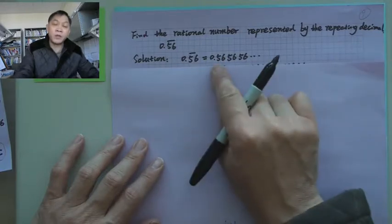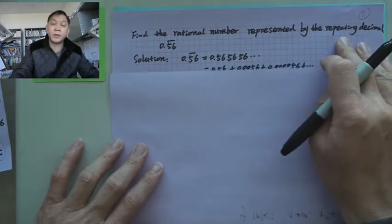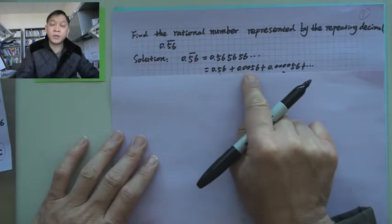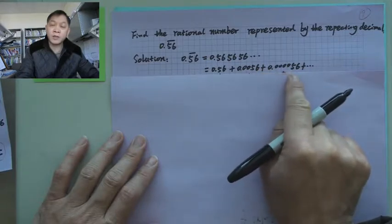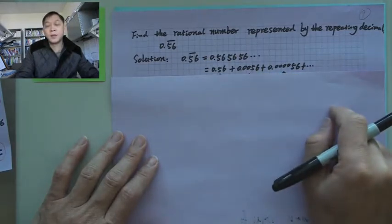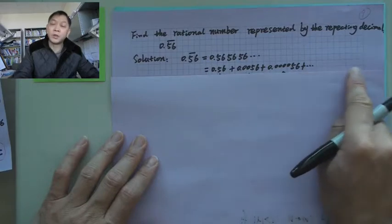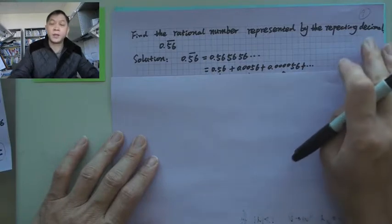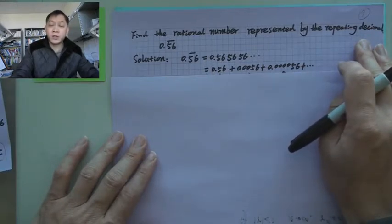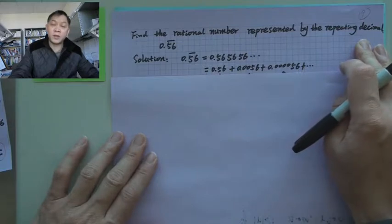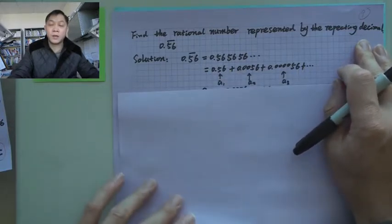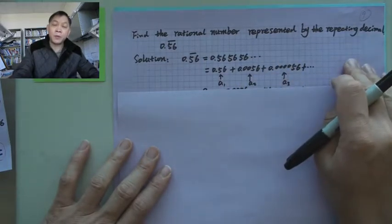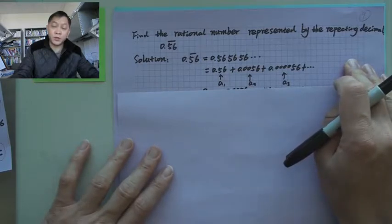Now you know we can write 0.565656 in this way: 0.56 plus 0.0056 plus 0.000056 and so on, without stopping. So this is an infinite series. But this infinite series is also a geometric sequence. The first term, the second term, the third term. And what is the ratio if it is a geometric sequence?